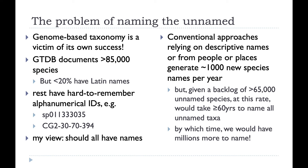I can see there may be dissenting voices saying you only give something a name when you've really characterised it. But my view is that if you're laying out the land, you've got to give everything a name. With conventional approaches relying on descriptive names or names for people or places, we're generating about 1,000 new species names per year. At that rate, we'd take 60 years or more to name all the unnamed taxa, by which time we'd have many millions more taxa to name. So something has to change.